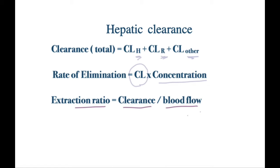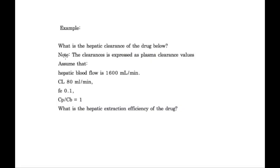Now let's take an example and see how we can use these equations to calculate hepatic clearance. What is the hepatic clearance of the drug below? Note the clearance is expressed as plasma clearance and assume that the hepatic blood flow Q is 1060 ml per minute, the clearance Cl is 80 ml per minute, and Fe is 0.1. Fe is the fraction excreted unchanged in the urine. Cp over Cb — the concentration in the plasma over the concentration in the blood — equals 1. The second question is: what is the hepatic extraction efficiency of the drug?